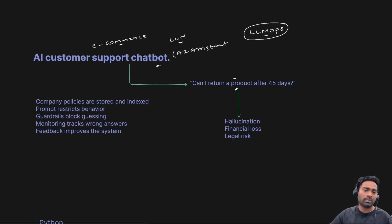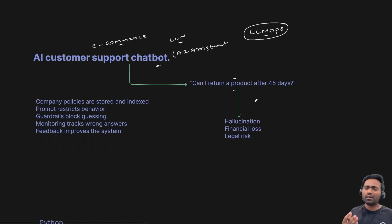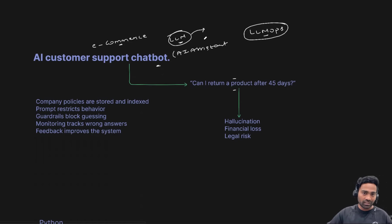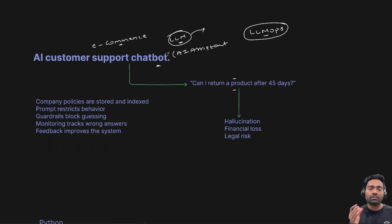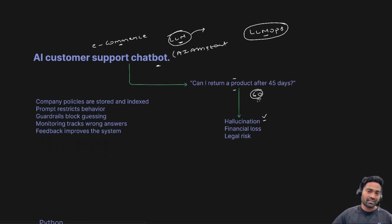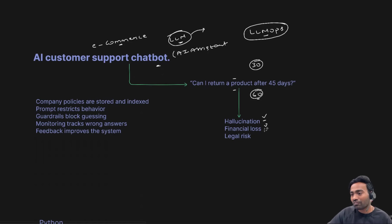One of the users logs into the platform and asks the chatbot: 'Can I return a product after 45 days?' — a very common question. Because this large language model is not aware of your company policies or your company's complaints, it just looks at information on the internet. Let's say it does not find any information about your company — it starts hallucinating. It looks at random data and tells the customer: 'Yes, you can return the product within 60 days.'